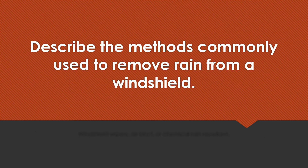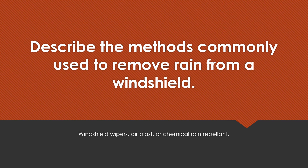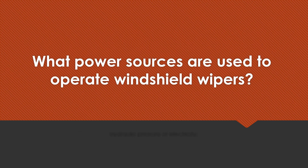Describe the methods commonly used to remove rain from a windshield. Windshield wipers, air blast, or chemical rain repellent. What power sources are used to operate windshield wipers? Hydraulic pressure or electricity.